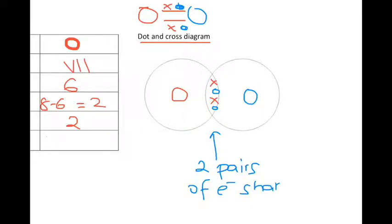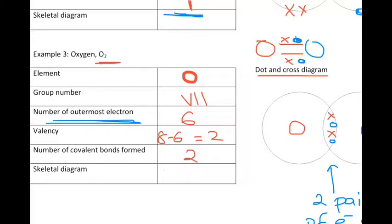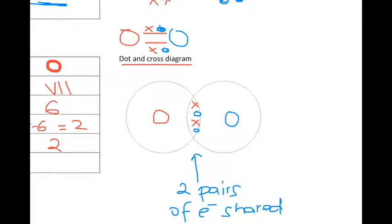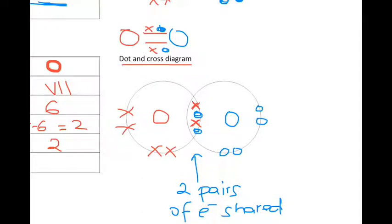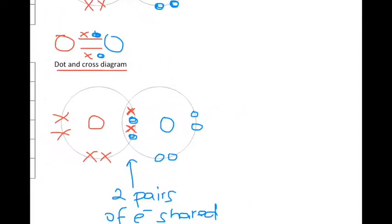Each oxygen should have 6 outermost electrons, so you should see 6 crosses: 1, 2, 3, 4, 5, 6. Oxygen blue — again, there should be 6: 1, 2, 3, 4, 5, 6. So that's the dot and cross diagram for O2.